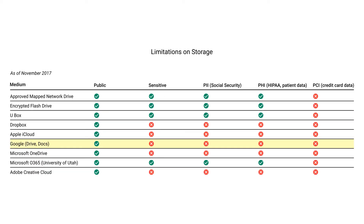There are limitations on the data that can be stored on Google Drive. As of November 2017, only public information can be put on Google services per Information Security Office policies. If you need to store protected health information or personally identifiable information, you'll need to find an alternative. Always check for updated policies to see which are available and what you can store on which services.